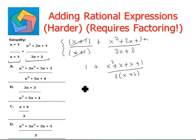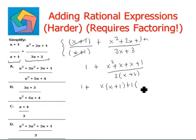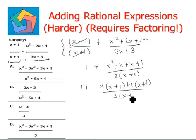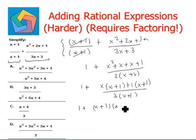This can be further simplified to x times x plus 1, plus 1 times x plus 1, divided by 3 times x plus 1. This is nothing but 1 plus x plus 1 times x plus 1, divided by 3 times x plus 1.